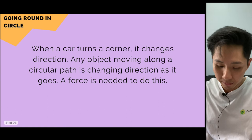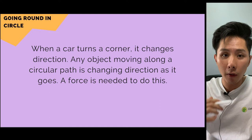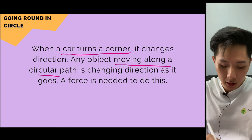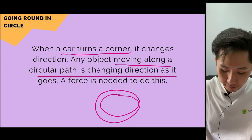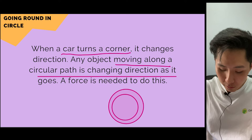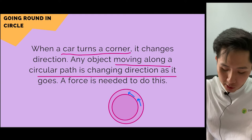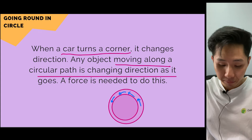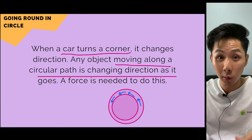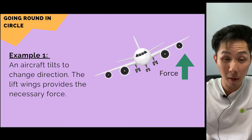Now another subtopic: forces involved when an object moves in a circle. When a car turns a corner, it changes direction. Any object on a circular path is constantly changing direction. To change direction, by Newton's first law, a resultant force is required. If an aeroplane wants to move in a circle while maintaining speed, it needs to exert a force on its wings to change direction.